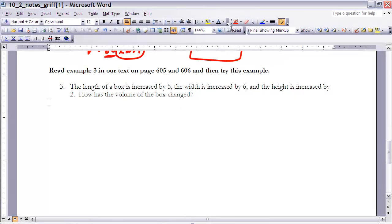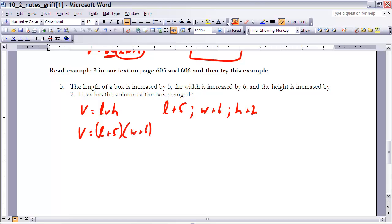All right, so let's take a look at example 3. It says the length of the box is increased by 5, the width is increased by 6, and the height is increased by 2. How has the volume changed? Well, we know that the original volume is equal to the original length times the original width times the original height. Well, now my new length is going to be 5 more, so I've got to add 5 to it. My new width is going to be 6 more, so I add 6 to it. And my new height is going to be 2 more, so I'm going to add 2 to it. So my new volume is going to be equal to length plus 5 times width plus 6 times the height plus 2.